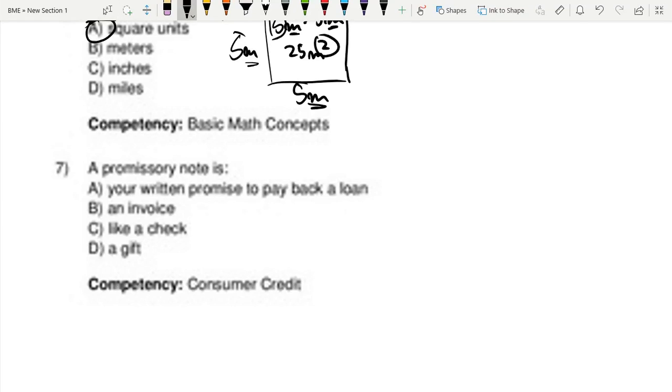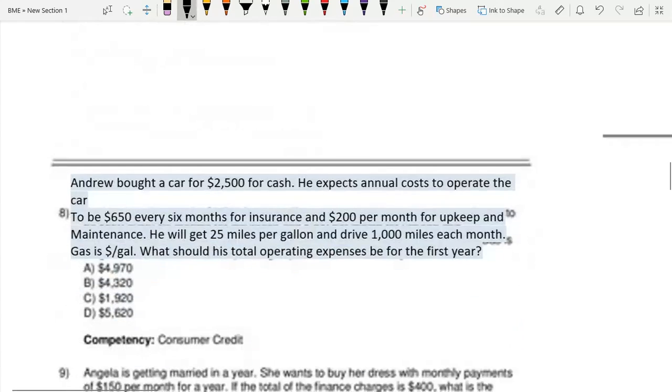The next question is a promissory note. A promissory note is your written promise to pay back a loan. I really don't know how to eliminate the rest of the options to come to this. You just kind of have to know it. We do have videos on business math terms though, and we have a Quizlet which is linked on our website on business math terms, which you can use to study for the test.